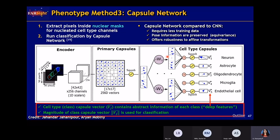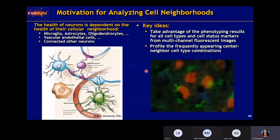Now let's move to the second project: nuclear neighborhood analysis. Recalling from our first slides, the brain structure is so complicated that individual cell level analysis is sometimes not enough — it is the multicellular relationships that play more important roles. The relationship of neurons and their assistant cells can be regarded as a traffic system: neurons are the cars, microglia act like ambulances coming to clean dead cells, and astrocytes and oligodendrocytes come to fix and build up the traffic flow.